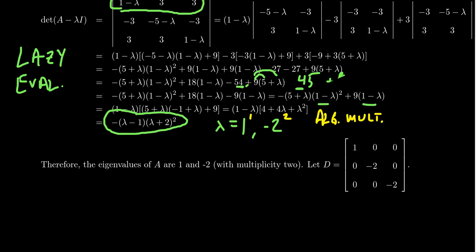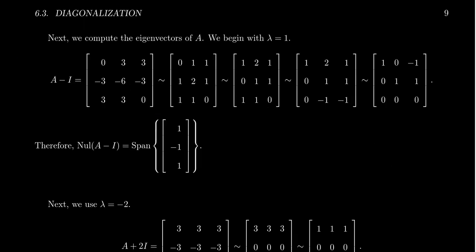In practice, finding eigenvalues through the characteristic polynomial is typically done with a computer using techniques to simplify determinant calculations, and numerical approximations of eigenvalues are often necessary. Once we've factored the characteristic polynomial, we can describe the eigenvalues: 1 and negative 2 twice. We construct our diagonal matrix D by putting those eigenvalues along the diagonals with their algebraic multiplicities: 1, negative 2, negative 2. Now we start looking for eigenvectors, beginning with the eigenspace associated to lambda equals 1.